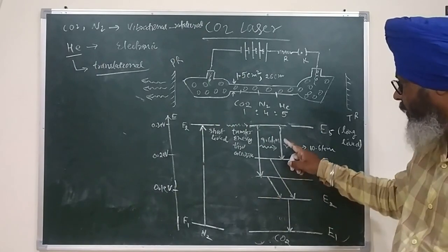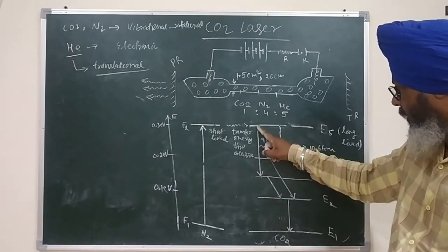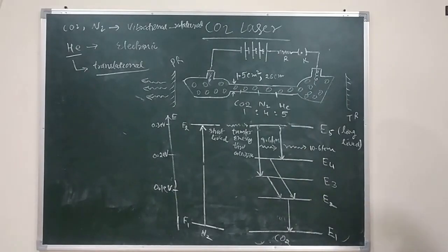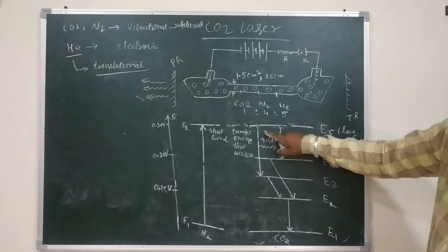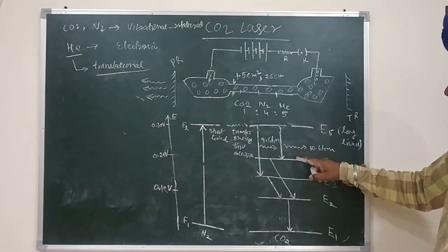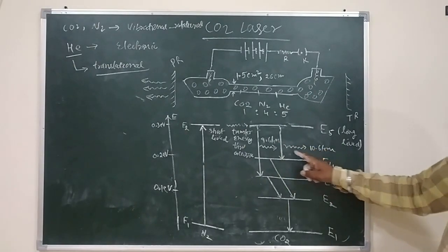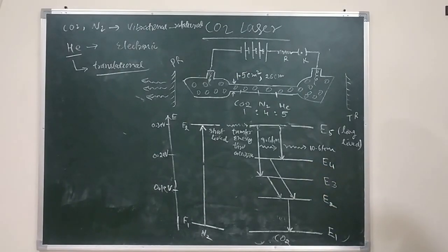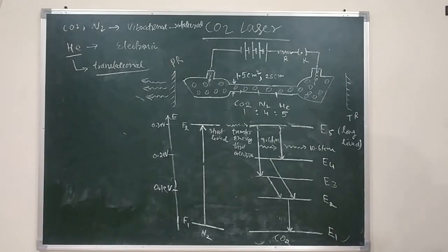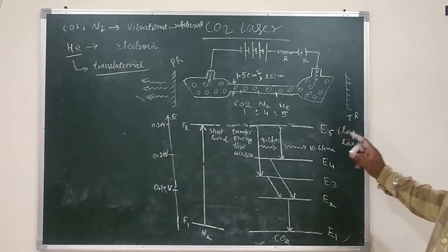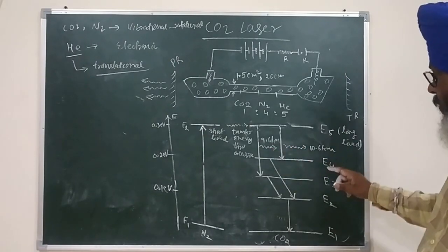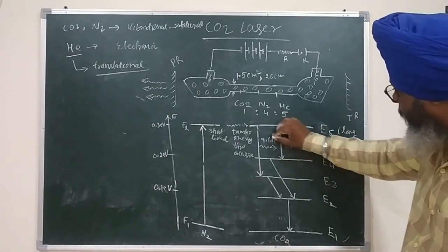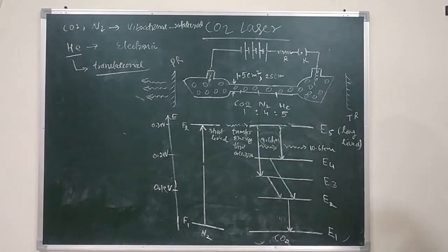Lasing action occurs between E5 and E4, and also between E5 and E3 — both transitions are allowed. The E5→E4 transition at 10.6 μm is the stronger transition, and E5→E3 at 9.6 μm is weaker. Both wavelengths appear in the output because the wavelength difference is too small to allow resonance-based filtering. So the CO2 laser output contains both 10.6 μm (more abundant) and 9.6 μm (less abundant).